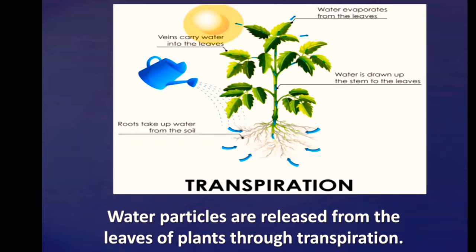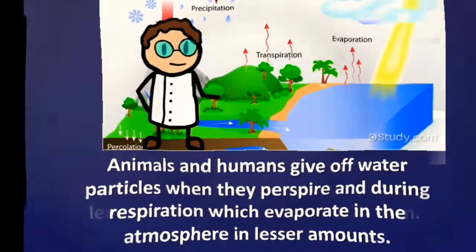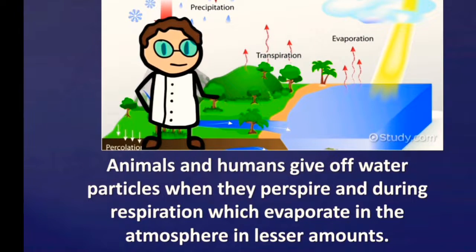Water particles are released from the leaves of plants through transpiration. Animals and humans give off water particles when they perspire and during respiration, which evaporate in the atmosphere in lesser amounts.